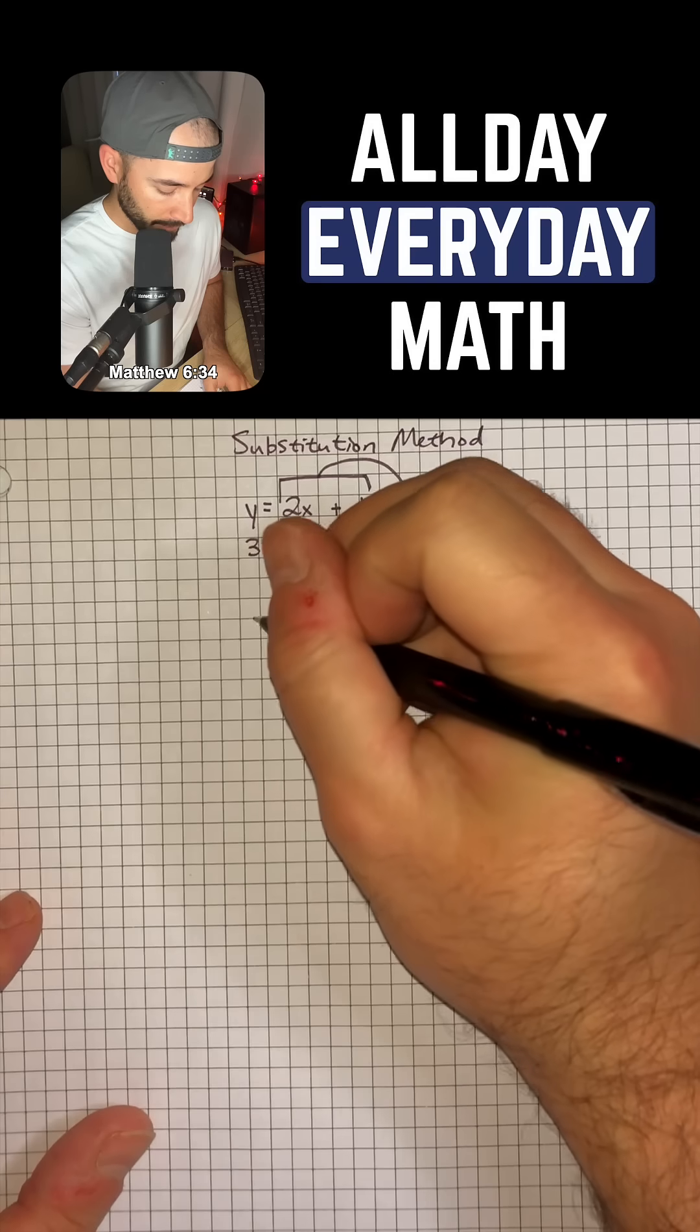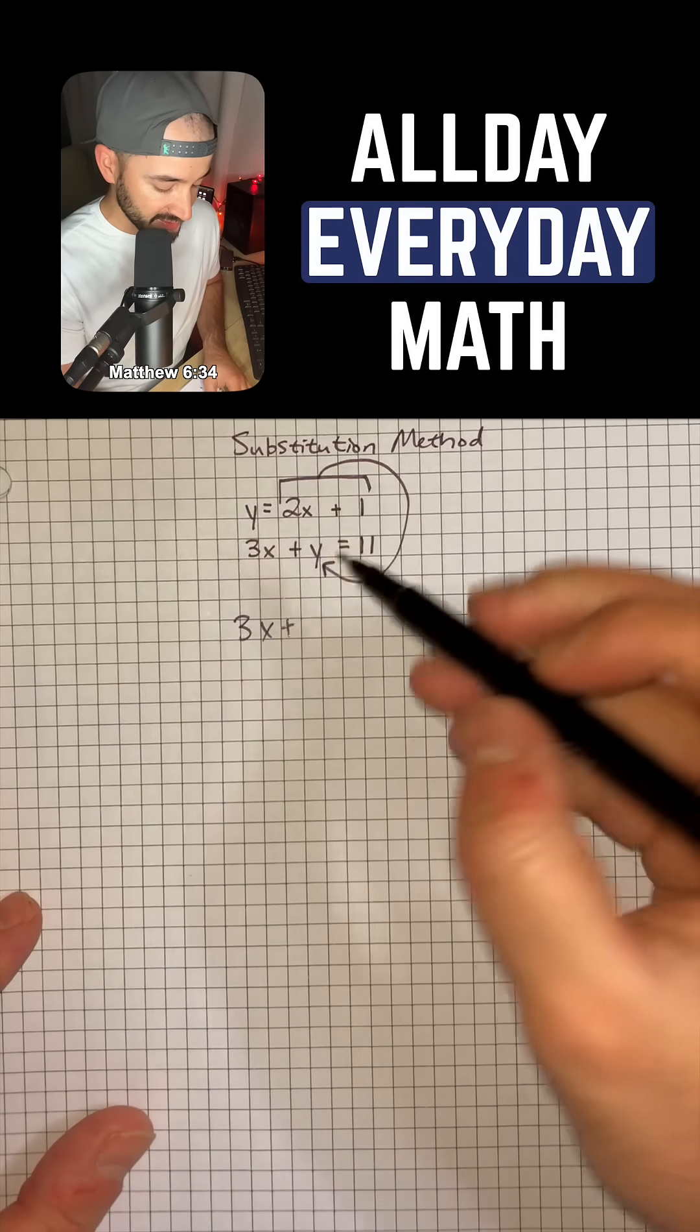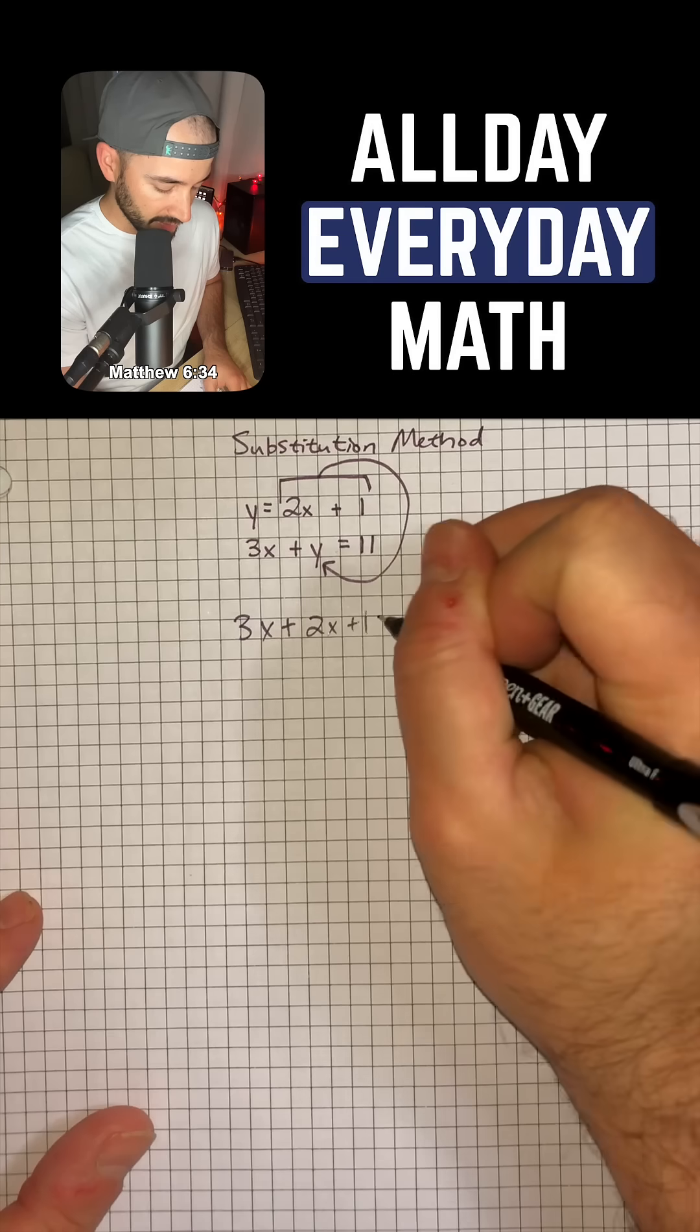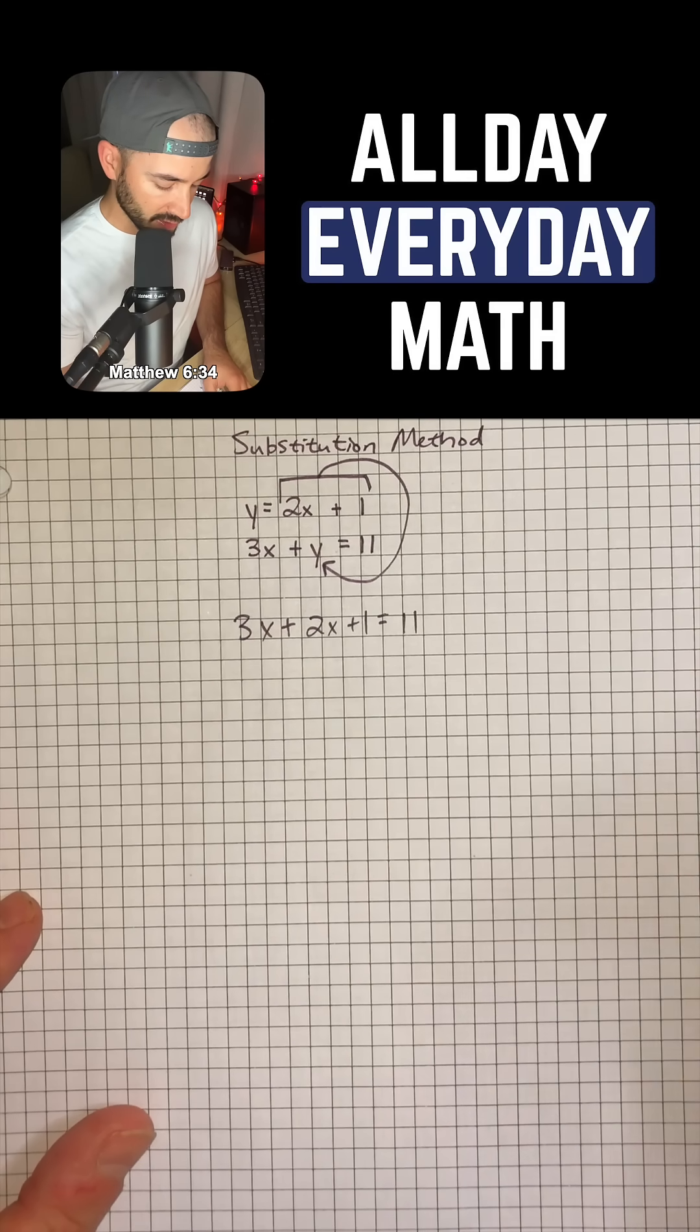So if we do that we'll have 3x plus, instead of y, we're going to have 2x plus 1 is equal to 11, and now we can just solve this equation.